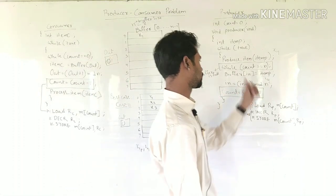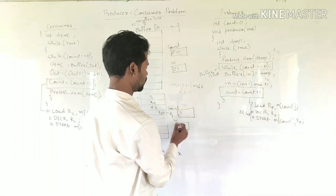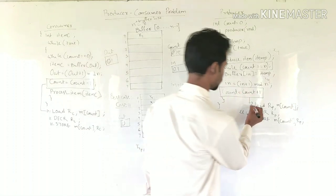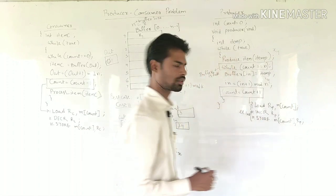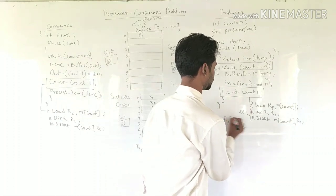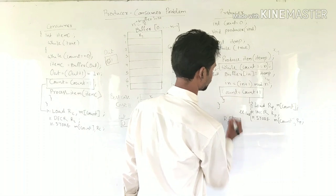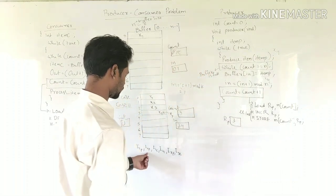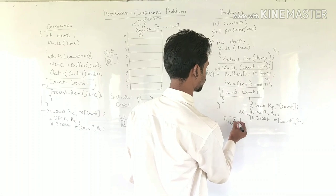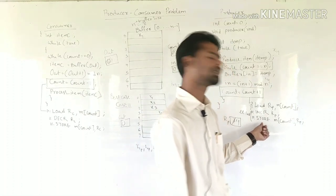After inserting x4, in = (3 + 1) mod 8 = 4. Then count = count + 1 begins executing. Micro-instruction I1 (load RP from m_count) executes — RP gets value 3. Micro-instruction I2 (increment RP) executes — RP becomes 4. Before executing micro-instruction I3 (store RP to m_count), the producer is preempted.